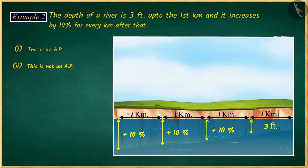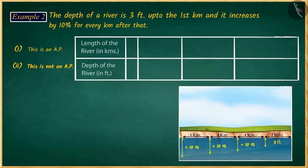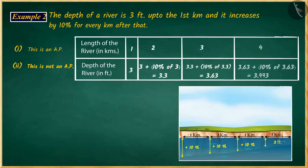Let us first write a list for the given situation. According to the question, the depth of the river increases by 10% with every kilometer. That is, to get each term except the first term, 10% of the previous term must be found and added to the same. This is how we get a list.